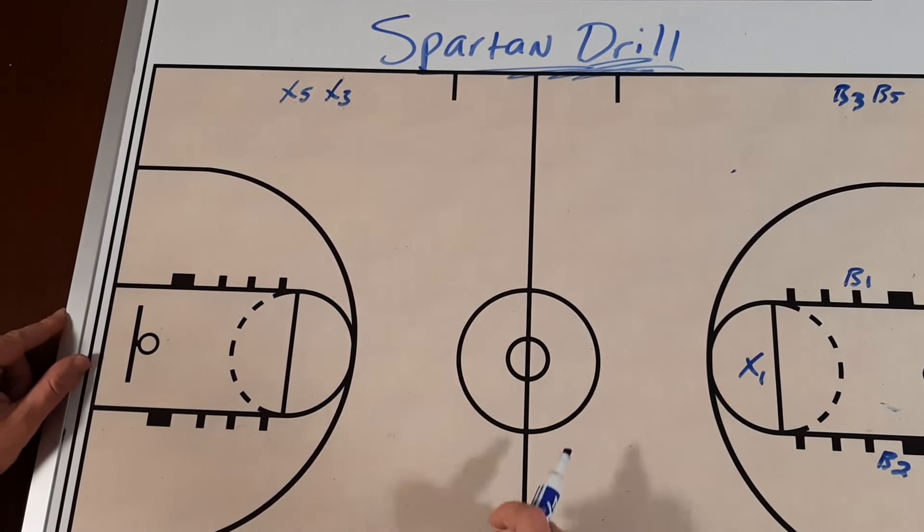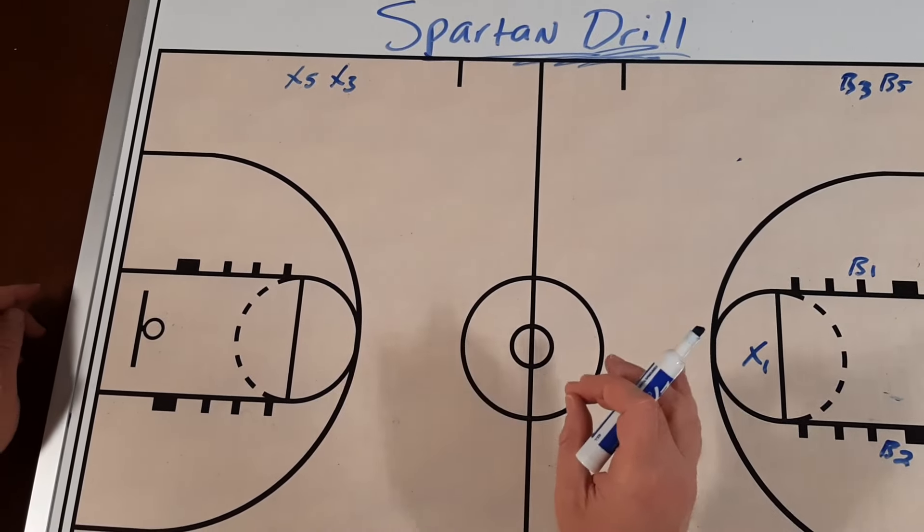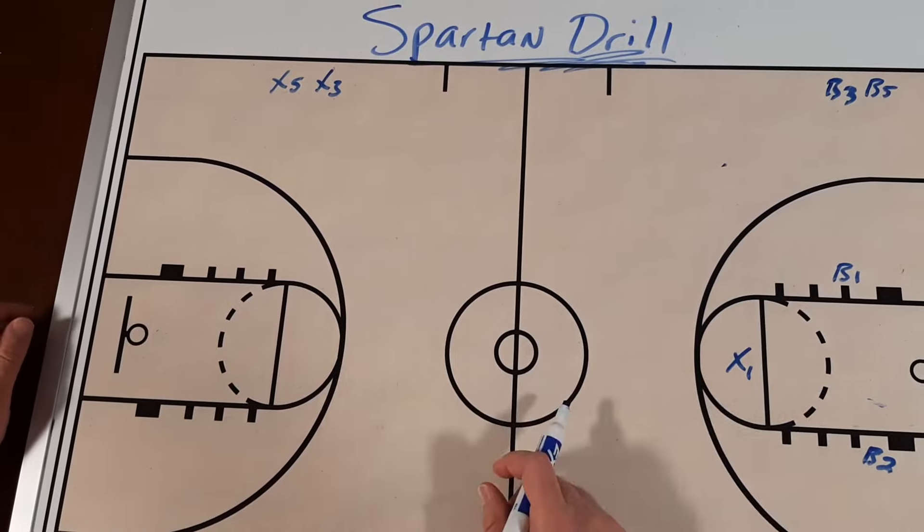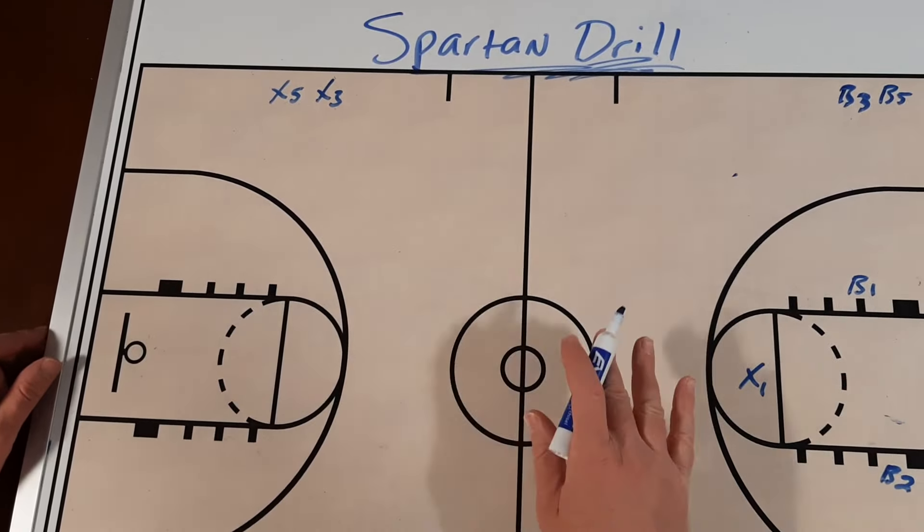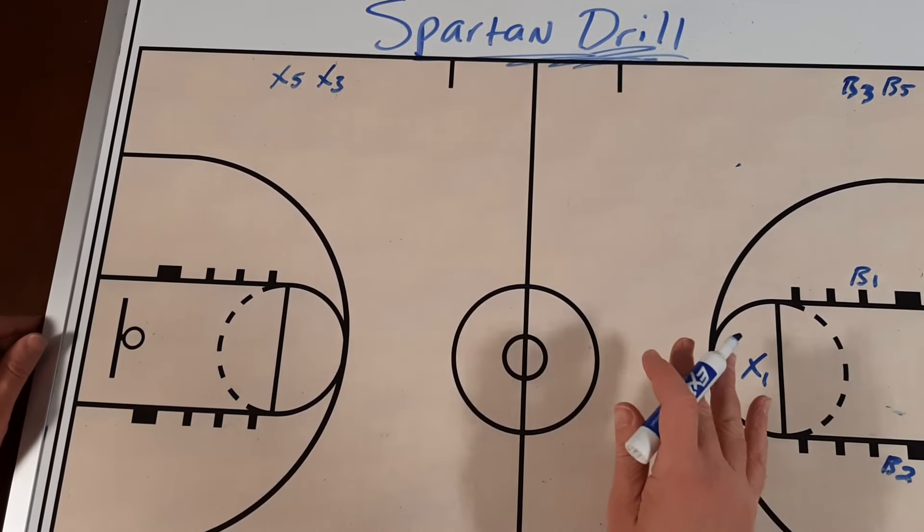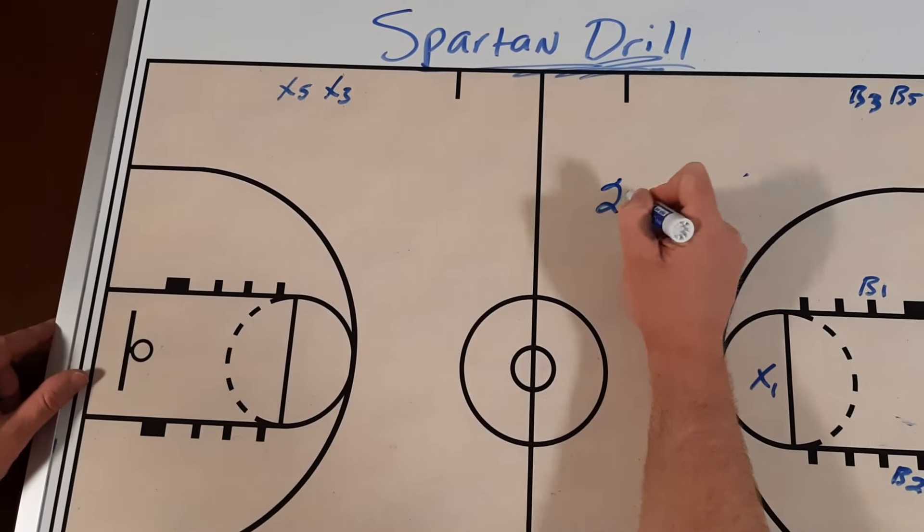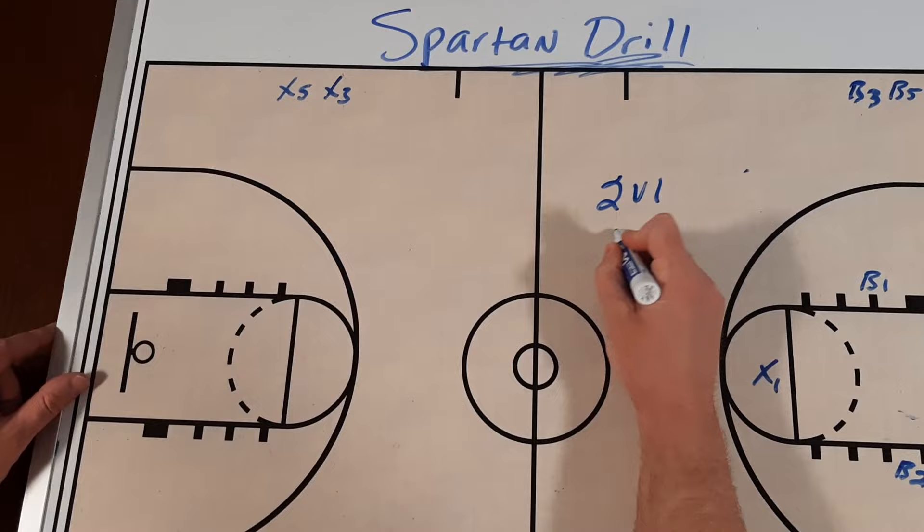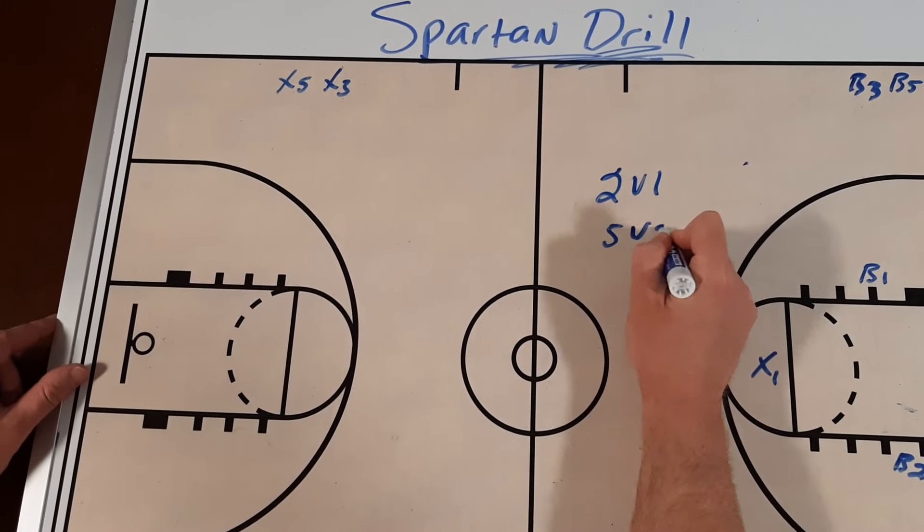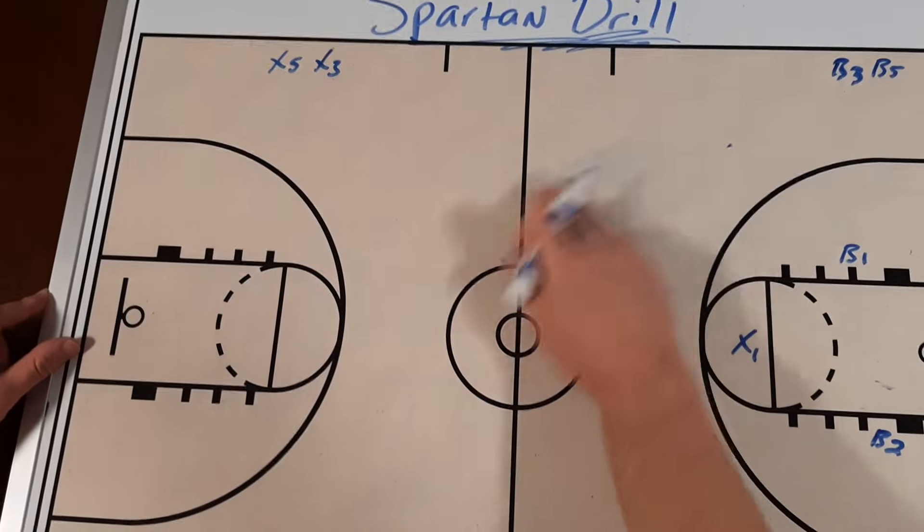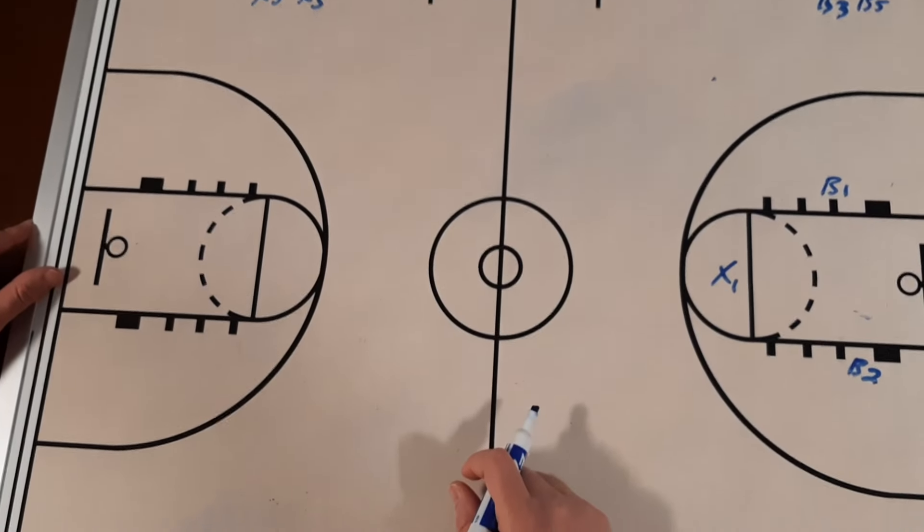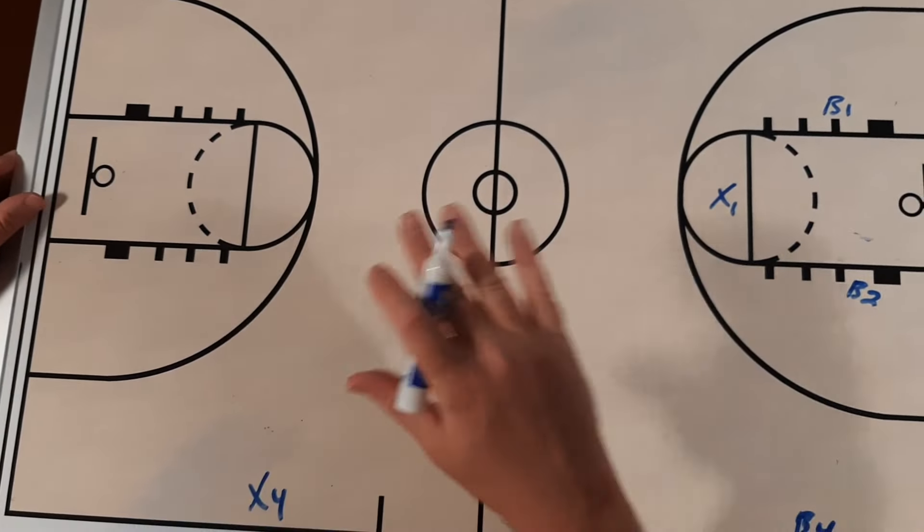In today's episode of Focus, I'm going to take you through one of my favorite transition drills called Spartan Drill. I got the drill from Michigan State Coach Tom Izzo. It's a drill they like to use, so that's why I call it the Spartan Drill. It's a progressive transition drill that starts 2 vs 1, and it works its way all the way up to 5 vs 5. You're going to love it.